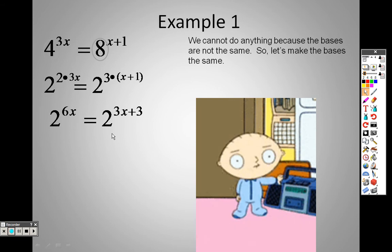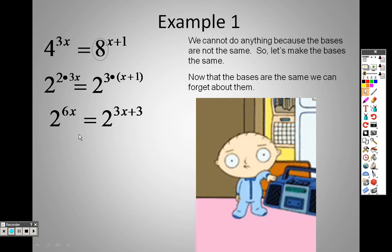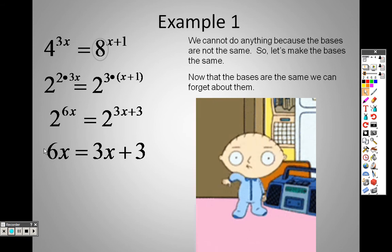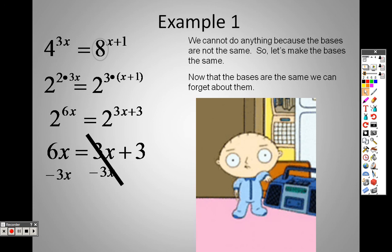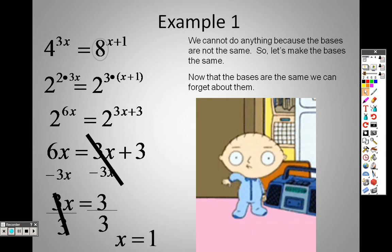Now that I now have the bases the same, I can forget about them. I don't need to worry about them. So really, forget that they're even there. I can just solve the top. So now it's like a regular old equation. 6x equals 3x plus 3. I can very simply just combine my x's by subtracting a 3x on both sides, and I end up with 3x equals 3. And I can divide both sides by 3, and I get x equals 1 as my answer.